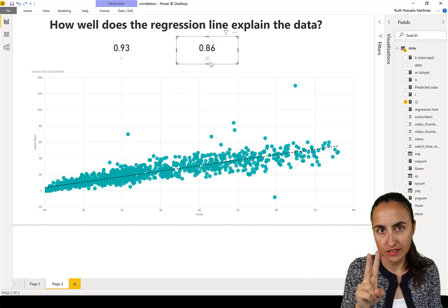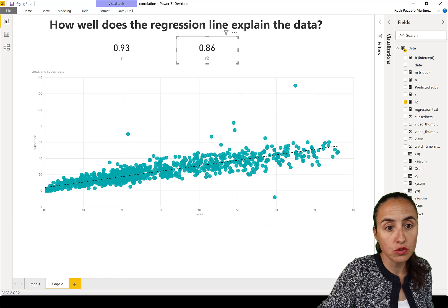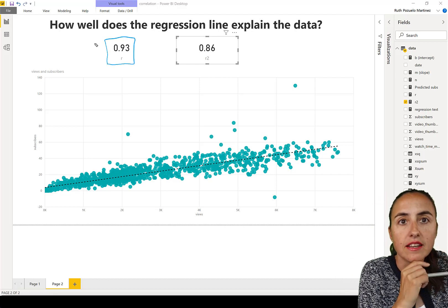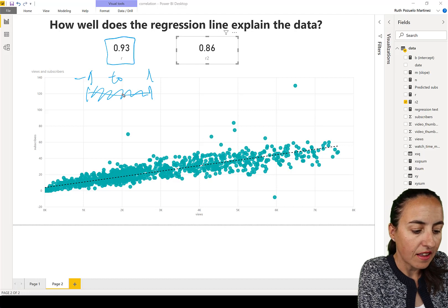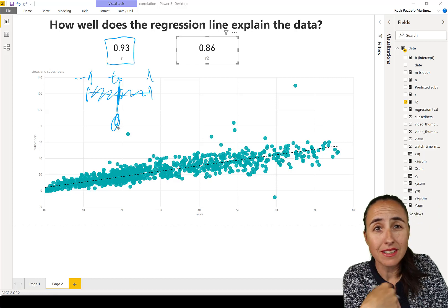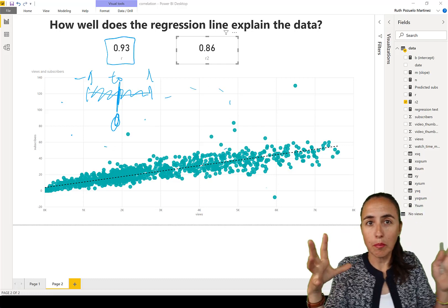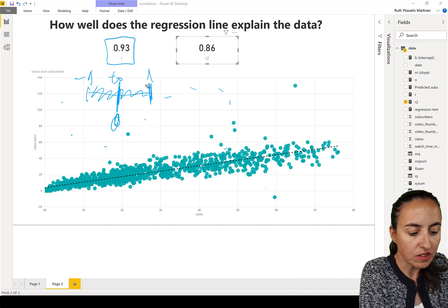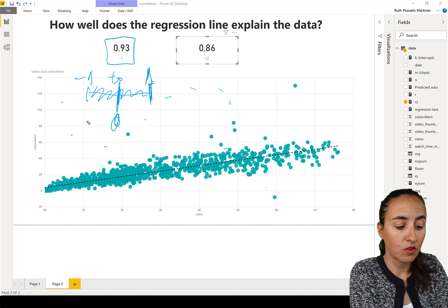So r tells us two things as I mentioned. It tells us how strong the relationship is between those two variables and that is based on the number that we get in here. So value ranges from minus one to one. If r is equal zero, it means that there is no relationship at all and you will see points everywhere. You will not see a pattern. You will not be able to fit this by any line. It will be just random points everywhere. But the closer to the one or the minus one you get, the stronger the relationship is between the two variables.